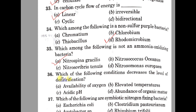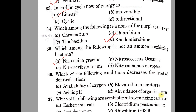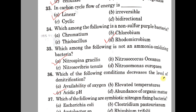Question 36. Which of the following conditions decreases the level of denitrification? A: Availability of oxygen, B: Elevated temperature, C: Acidic pH, D: Abundance of organic matter. The correct option is C, acidic pH. Conditions that increase denitrification include availability of organic matter, but acidic pH decreases the level of denitrification.